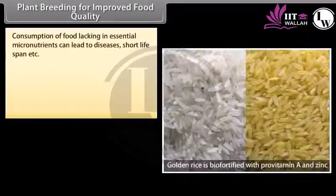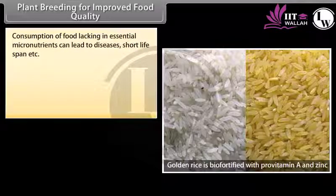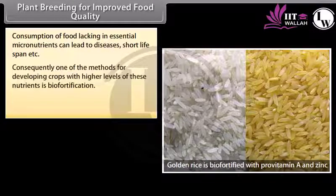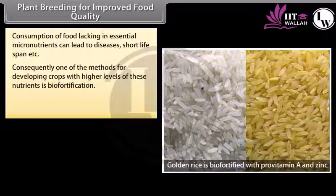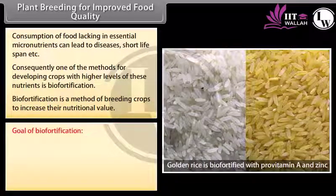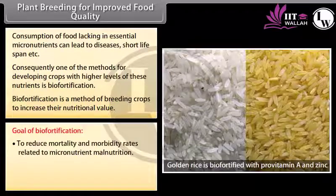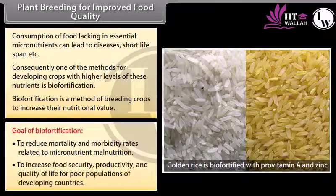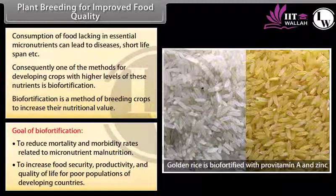Plant breeding for improved food quality: consumption of food lacking in essential micronutrients can lead to diseases and short lifespan. Consequently, one method for developing crops with higher levels of nutrients is biofortification. Biofortification is a method of breeding crops to increase their nutritional value. The goal of biofortification is to reduce mortality and morbidity rates related to micronutrient malnutrition, and to increase food security, productivity and quality of life for poor populations of developing countries.